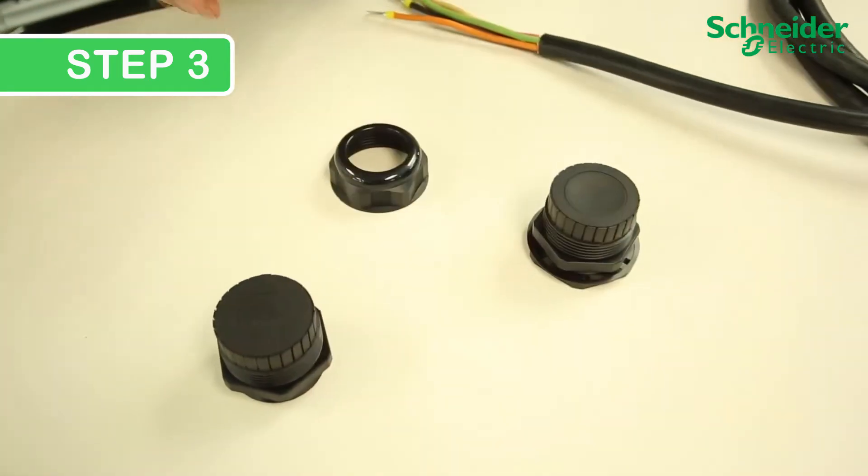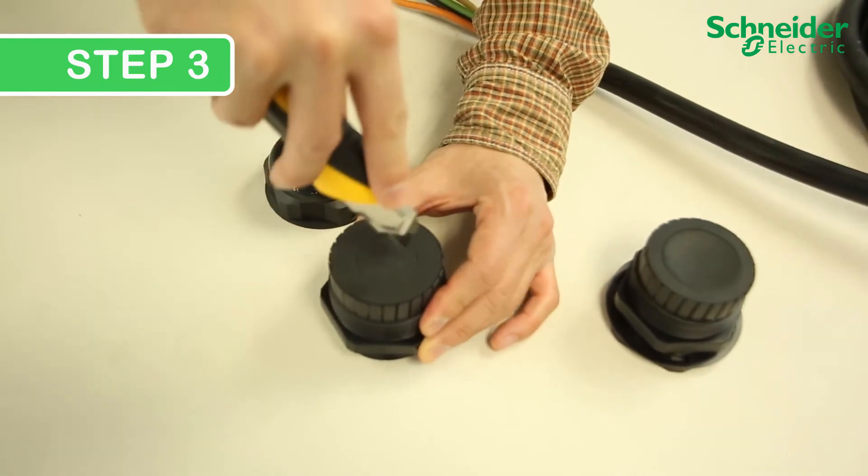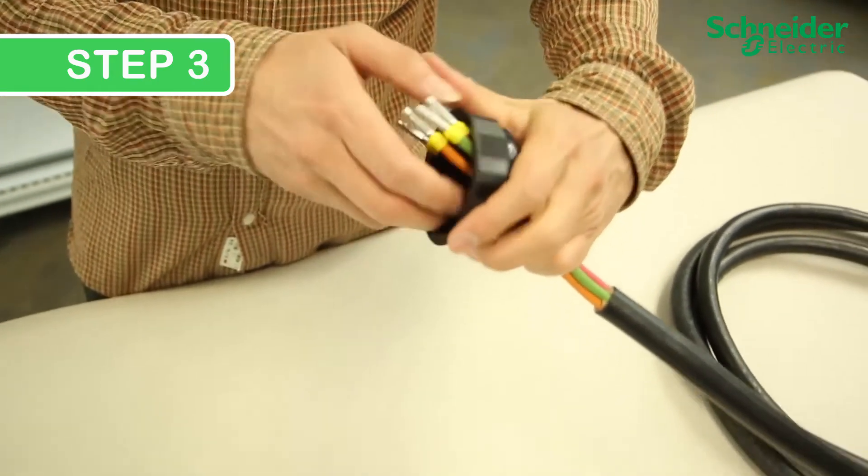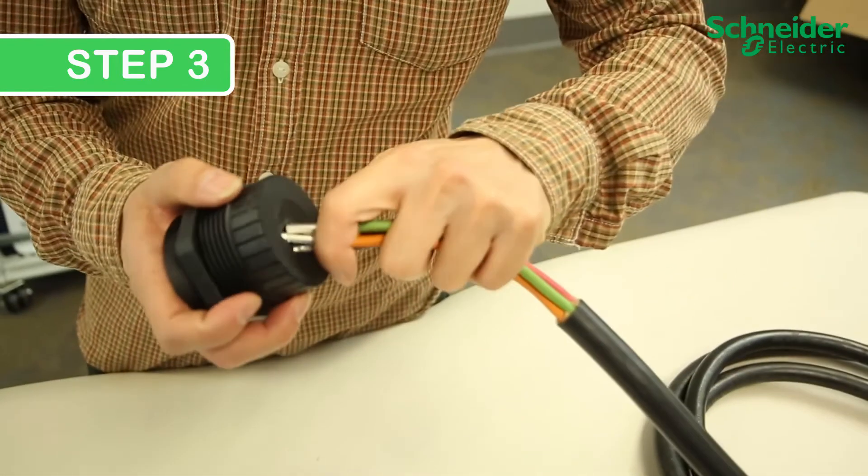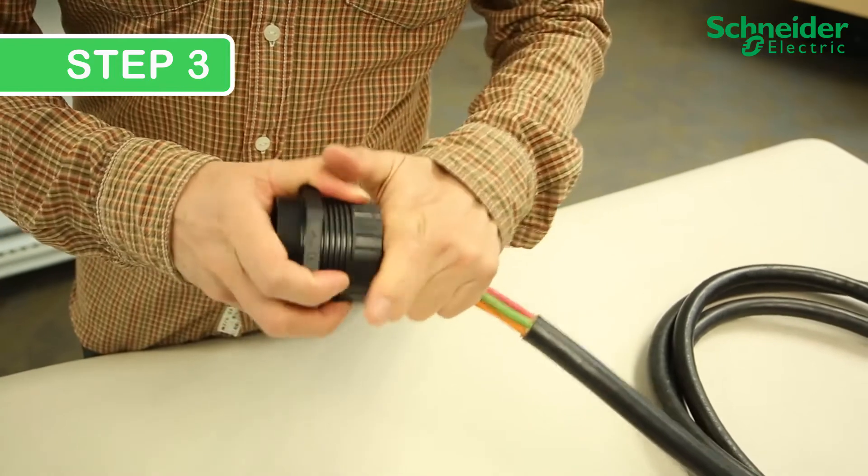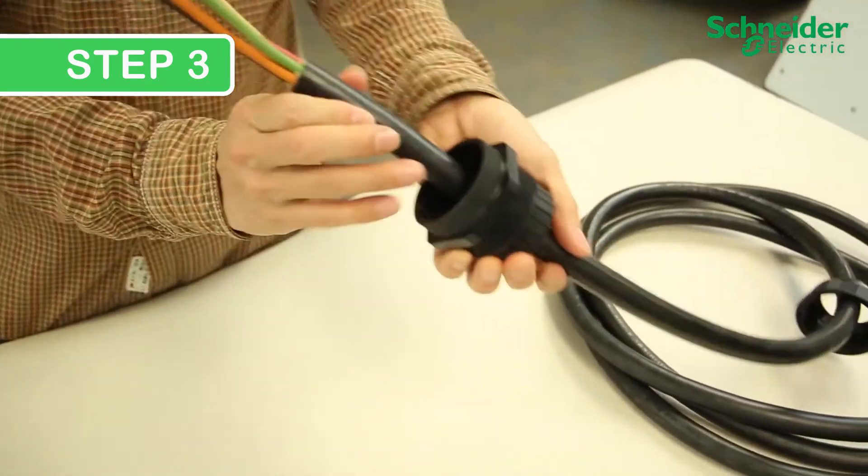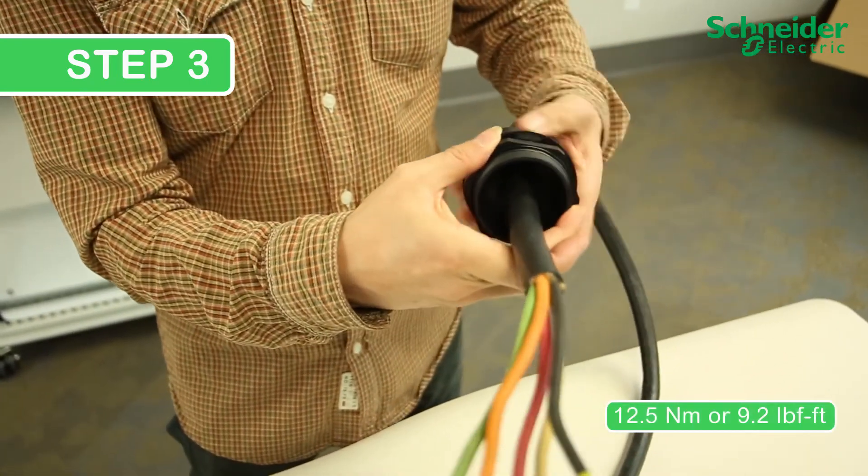To install the cable through a gland, make a small incision. Insert the ring and push the cable through incision in the AC gland. Tighten the ring over the gland to 12.5 Nm or 9.2 lb.